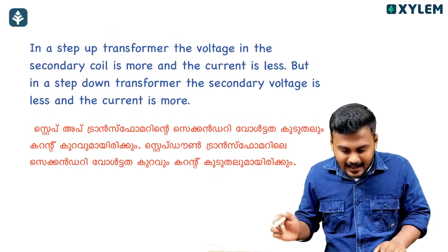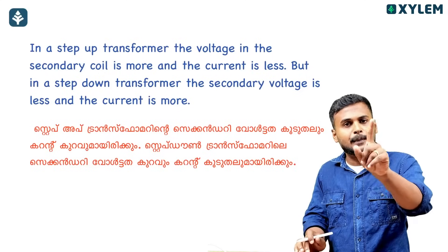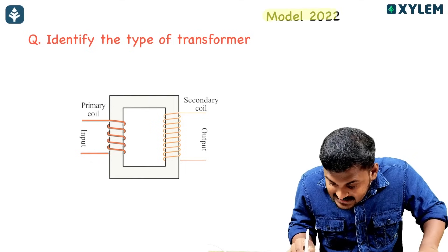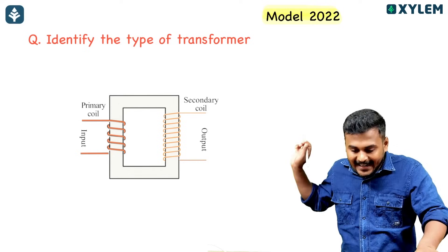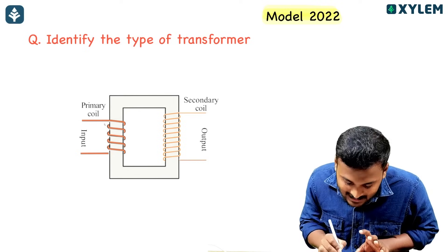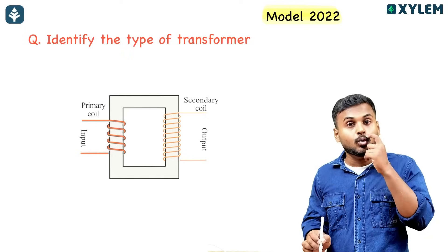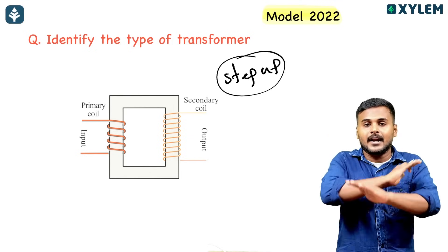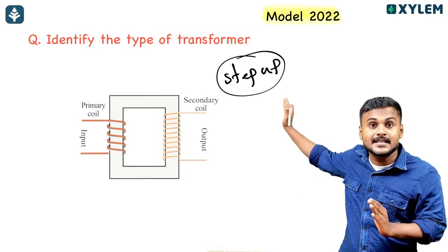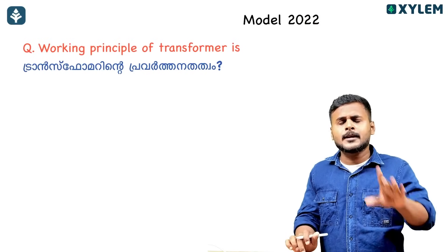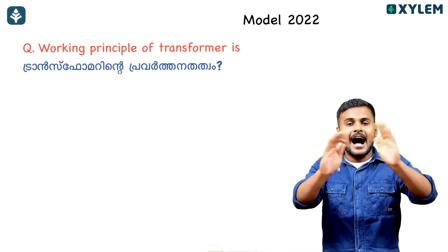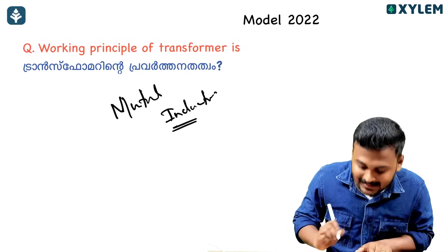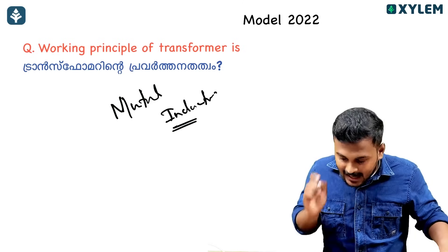Exam question: Identify the type of transformer. If the secondary number of turns is greater than primary number of turns, that is a step-up transformer. What is the working principle of the transformer? The answer is mutual induction.